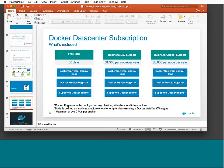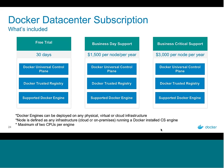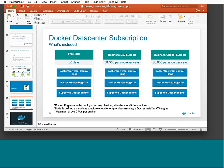On pricing and purchasing: Docker Data Center is available as a subscription with three options. First, a free 30-day trial with access to the full platform — Universal Control Plane and the registry. Then there's Business Day support from 9am to 6pm local time at $1,500 per node per year, and Business Critical which is 24/7, 365 support at $3,000 per node per year.